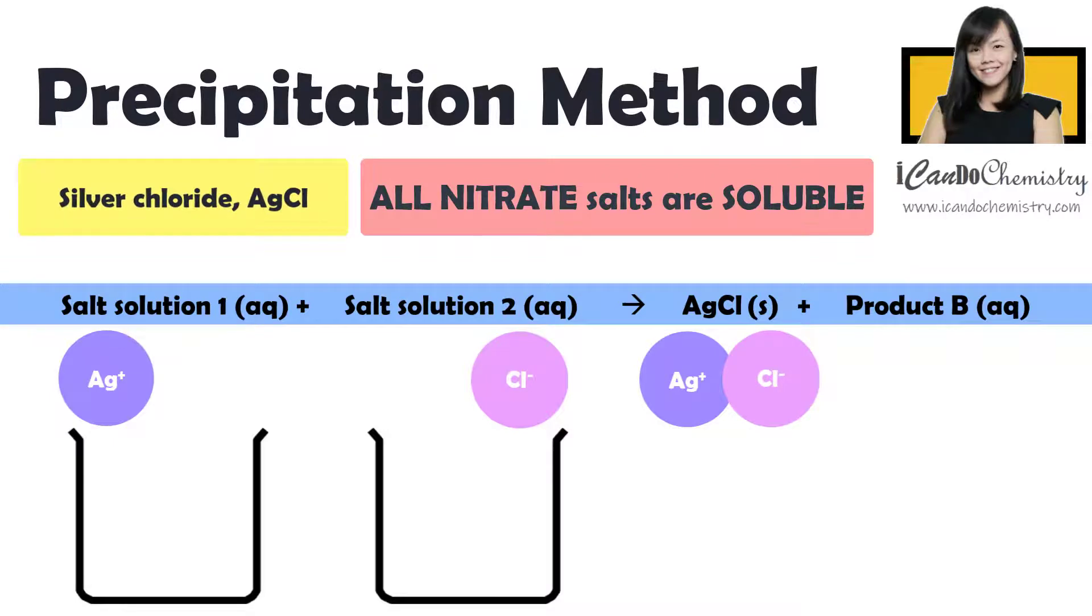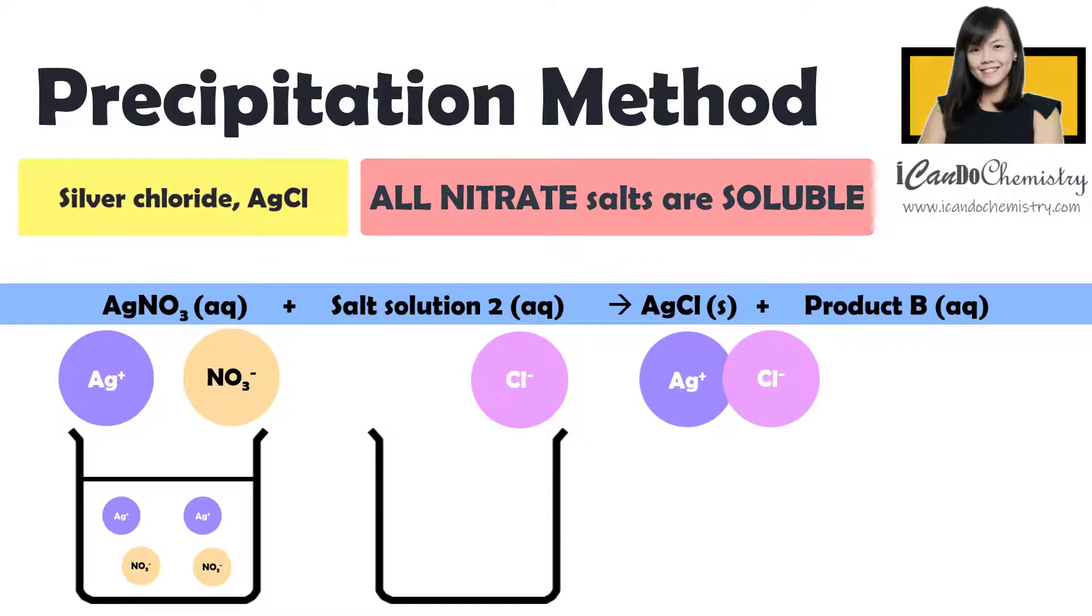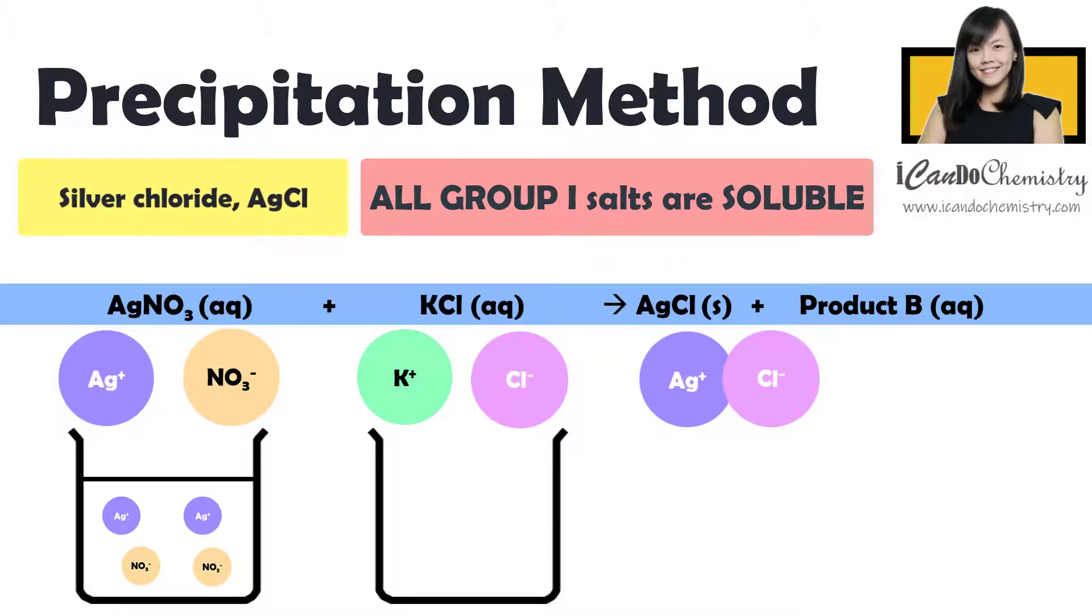Now all nitrate salts are soluble, hence we can pair silver cation with nitrate. Now the first salt solution will be silver nitrate. For the second salt, we can choose another group 1 cation with chloride. Let's choose potassium ion, K+. Now the second salt solution is potassium chloride, KCl.